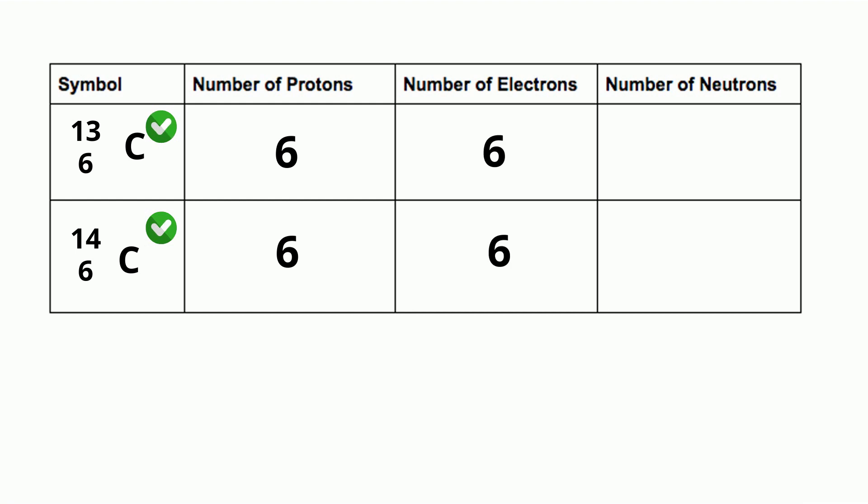Carbon 13 has a mass number of 13. 13 minus 6 equals 7 neutrons, 6 is the atomic number. And for carbon 14, you take a mass number of 14 minus the atomic number of 6 and you get 8 neutrons.